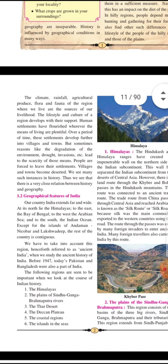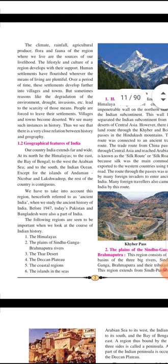So, next page. The climate, rainfall, agricultural produce, flora and fauna — these are new words. Flora means plants and fauna means animals. The animals and plants of the region where we live are sources of our livelihood. These are all sources of our livelihood; because of this only we are surviving on the land. The lifestyle and culture of a region develops with their support. According to that, we develop ourselves.